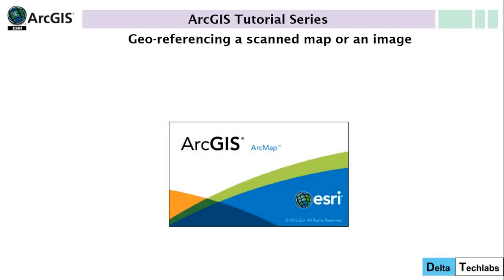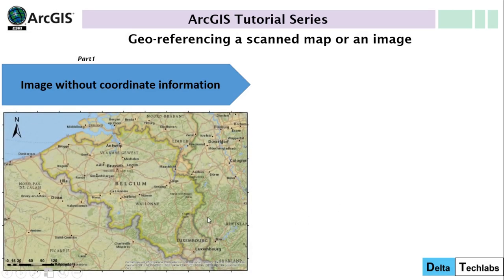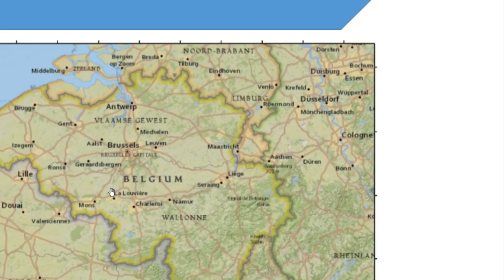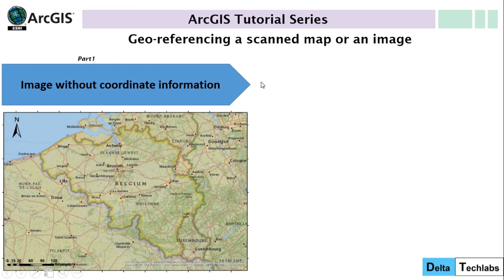Hello everyone, welcome to this ArcGIS tutorial on how to georeference an image or a scan map. I have divided this tutorial into two parts. In the first part, I'll show you how to georeference an image without any coordinate information stated on the figure. For example, I have selected this figure which is a scan map of Belgium, and if I zoom in, you can see that we don't have any coordinate information on the map — just a few names of major cities.